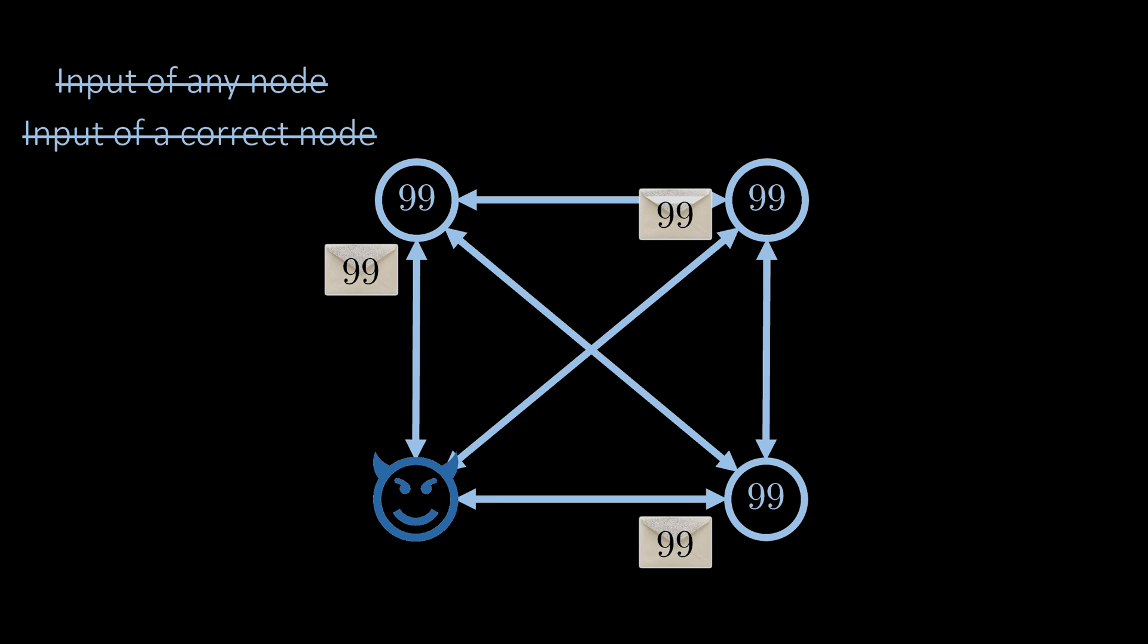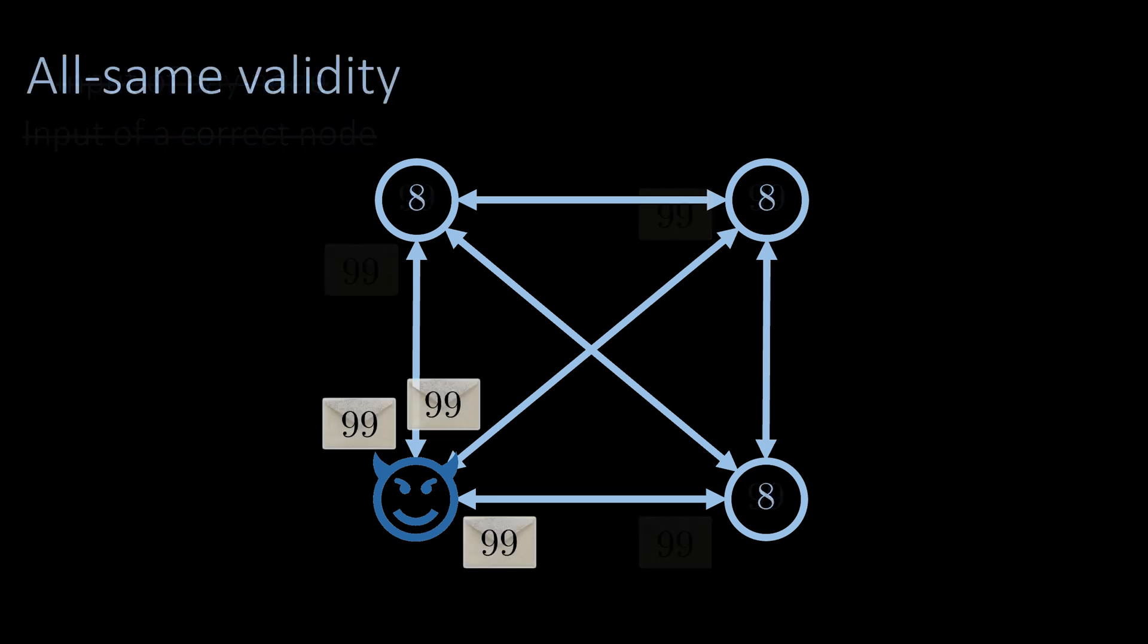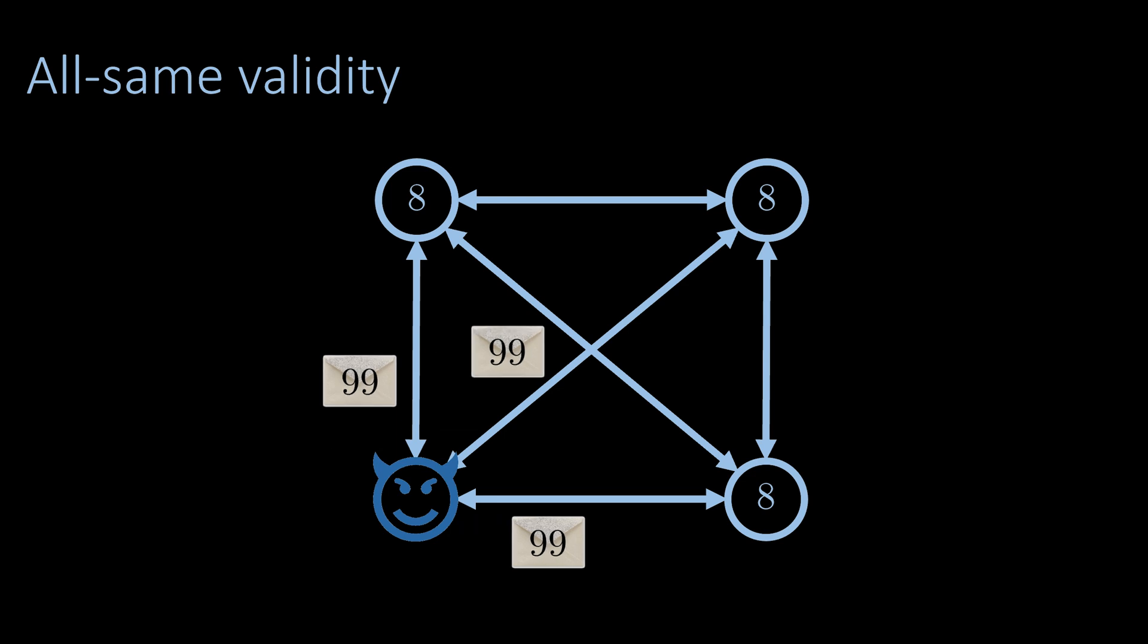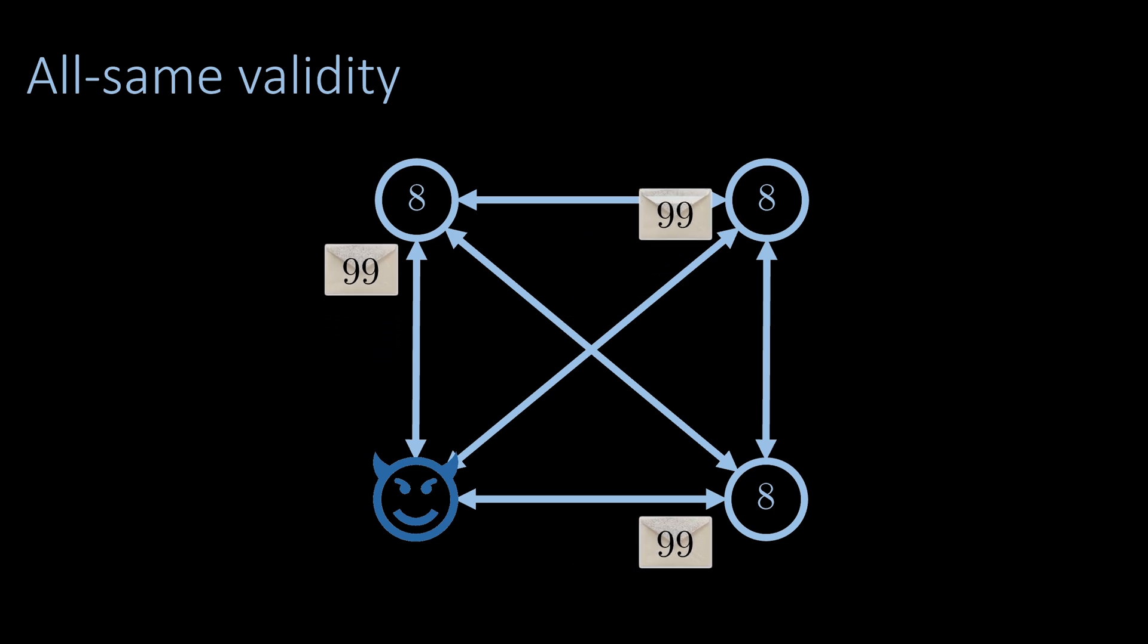What if we loosen up the restriction even more? What if we only require that if all correct nodes already start with the same value, then they must also agree on that value? For example, given three correct nodes that share the same input value, is it possible that they agree on their value regardless of the actions of a Byzantine node?